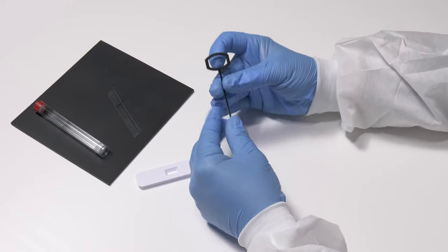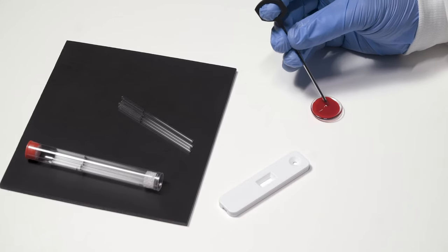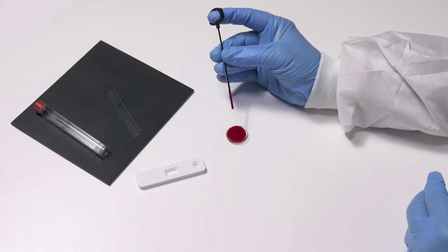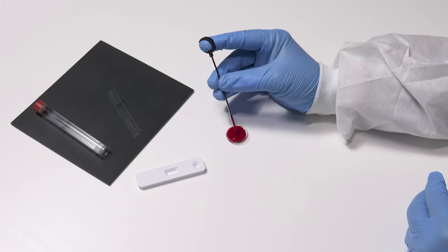After placing the capillary in the sample, gently pull the plunger upward to aspirate the sample. Control is easily maintained while filling to a calibrated indicator on the capillary tube.